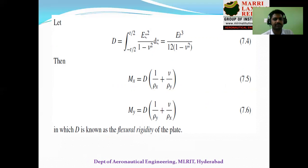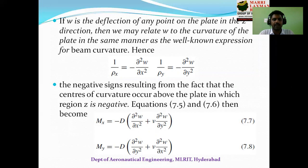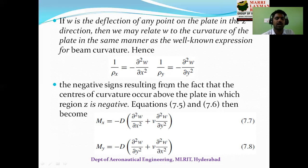To find the deflection at any point on the plate, we relate deflection to the curvature. From previous studies, the beam curvature expressions are: 1/ρx = −∂²w/∂x² and 1/ρy = −∂²w/∂y², where these are curvatures in the x and y planes. The negative sign indicates that the centers of curvature occur above the plate, where z is considered negative.